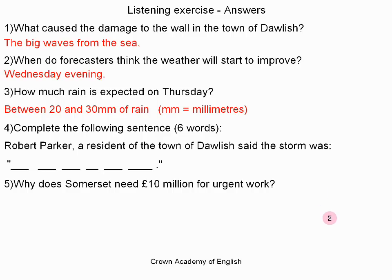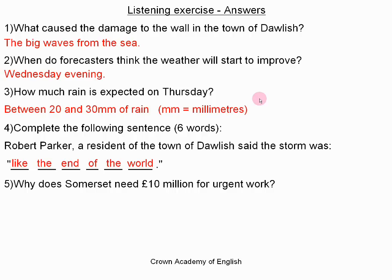When we say it we say millimeters, but when we write it we write the abbreviation MM. There are 1000 millimeters in one meter. Question four — I asked you to complete the following sentence. The answer is: Robert Parker, a resident of the town of Dawlish, said the storm was like the end of the world. And the last question: why does Somerset need 10 million pounds for urgent work? The answer is several rivers have flooded there.